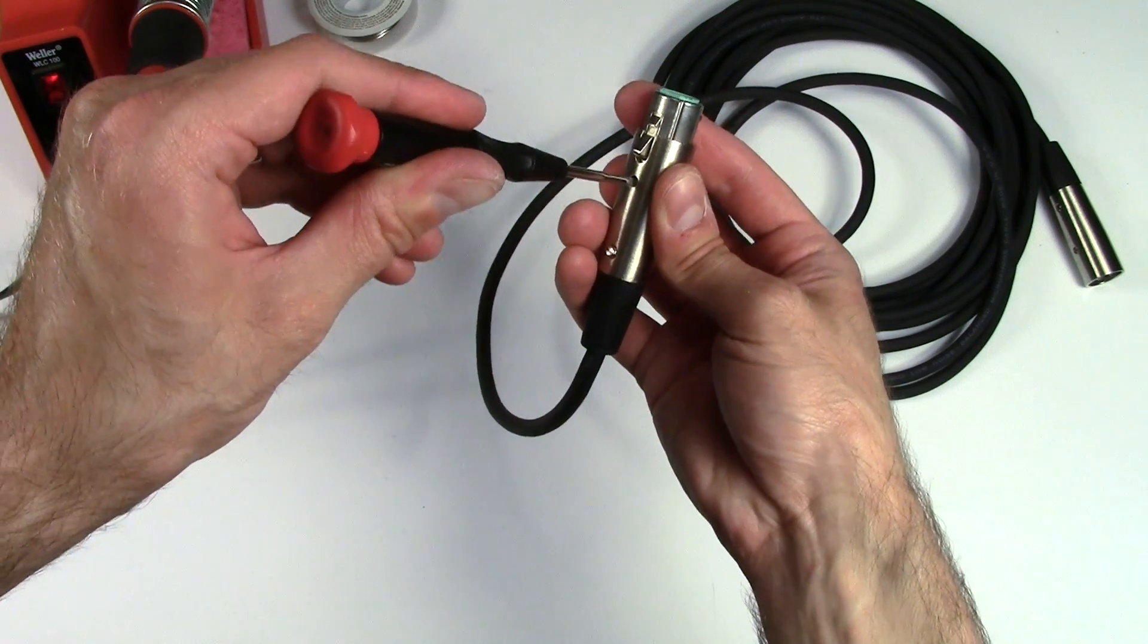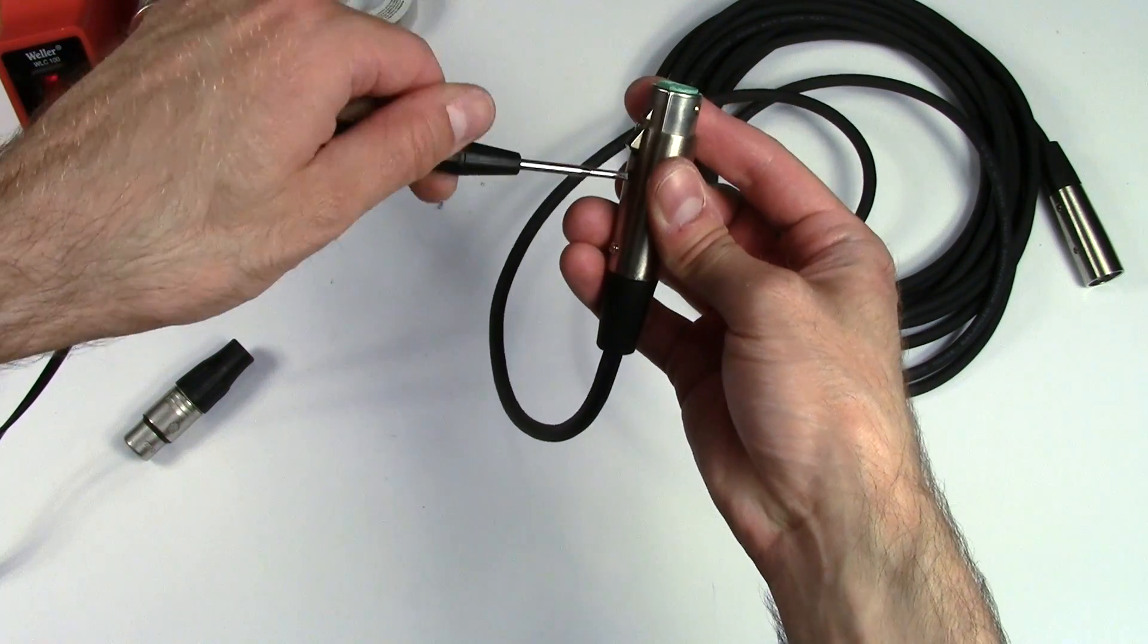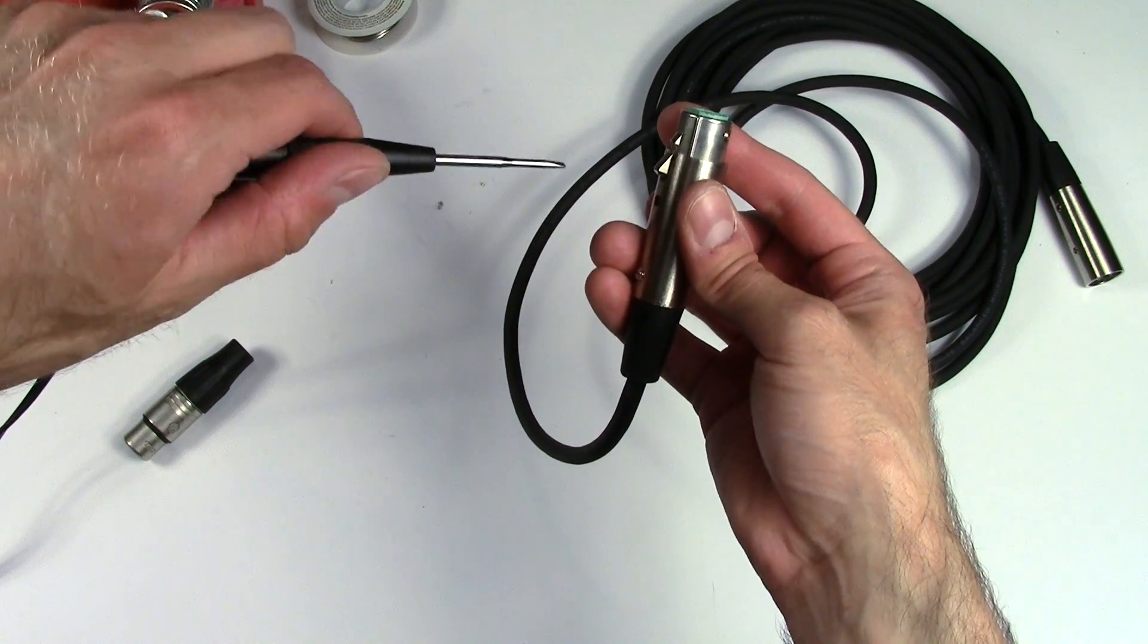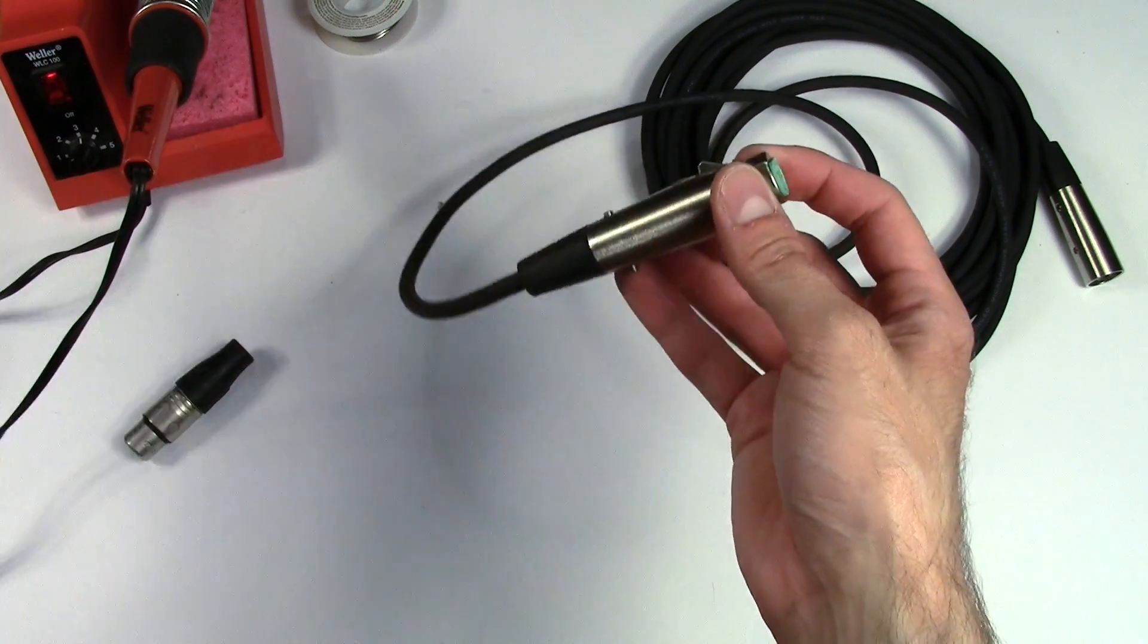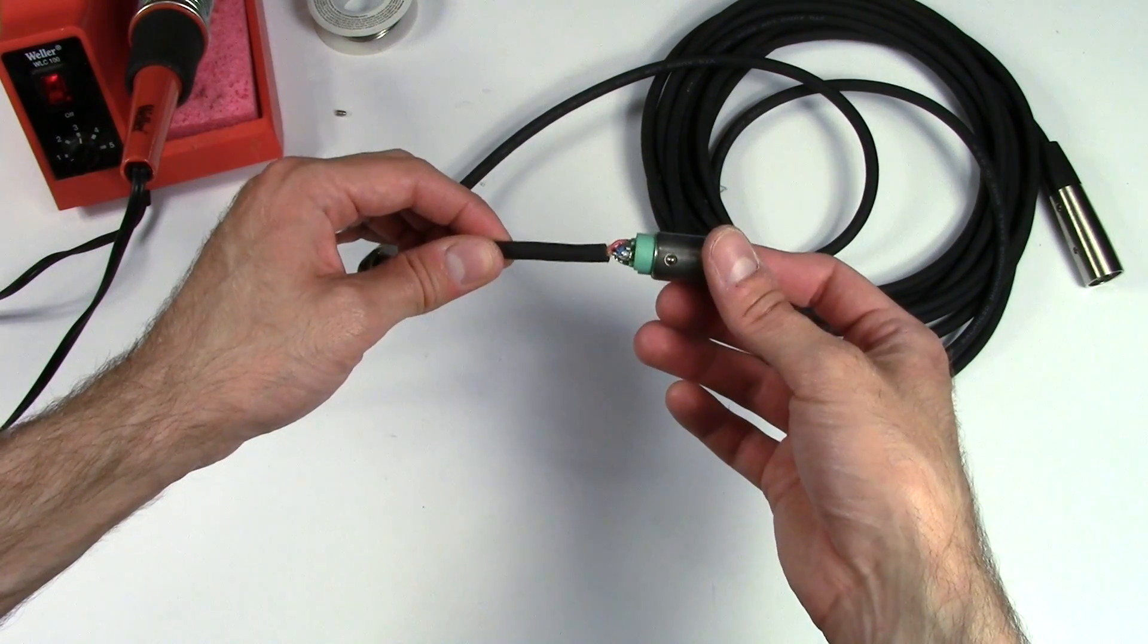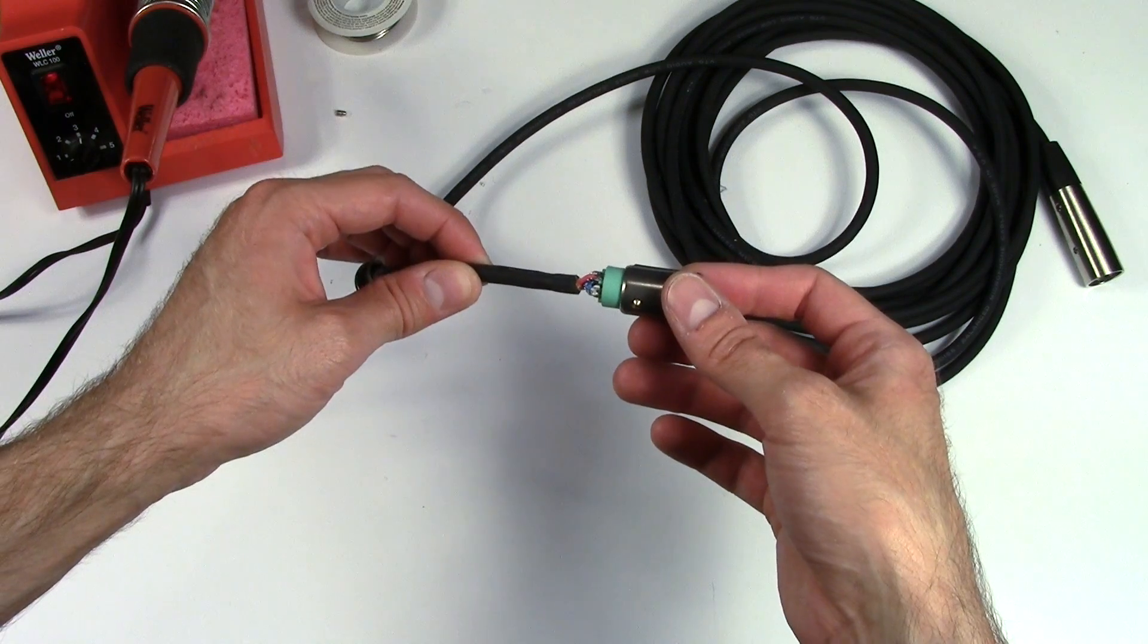Then you'd stick your screwdriver in this one and loosen it. But this is a reverse thread screw so it'll actually sink in as you go counterclockwise. At that point this whole shell will come apart like this. There's your solder joints. Let's get a closer look at those.